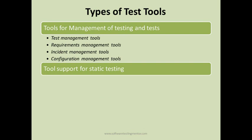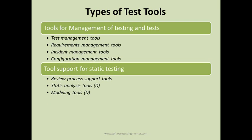The second category is tool support for static testing — any tool that supports static testing falls here. This includes review process support tools, static analysis tools, and modeling tools. Note that static analysis and modeling tools marked with 'D' are mostly used by developers rather than testers, though we cover all tools across the software development life cycle.